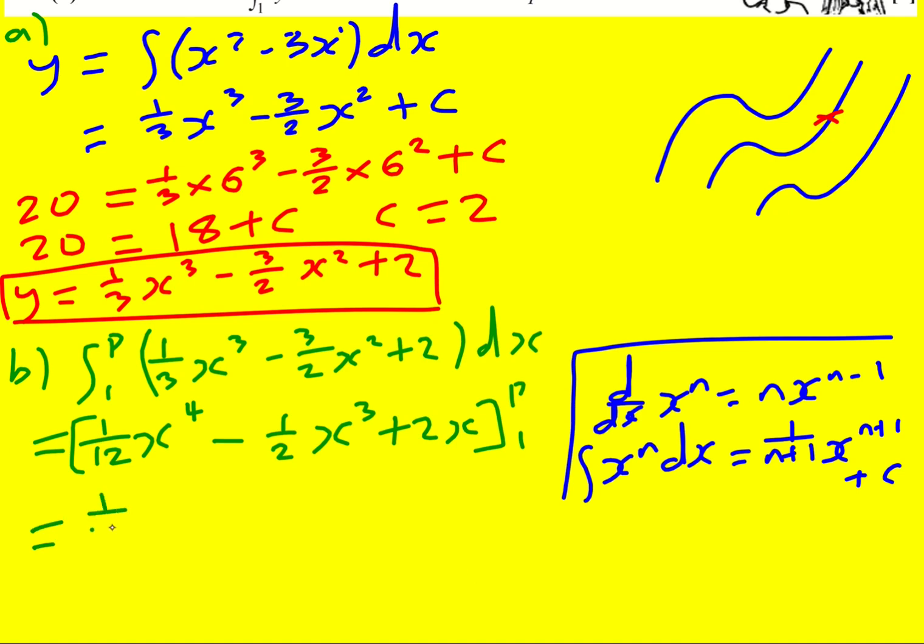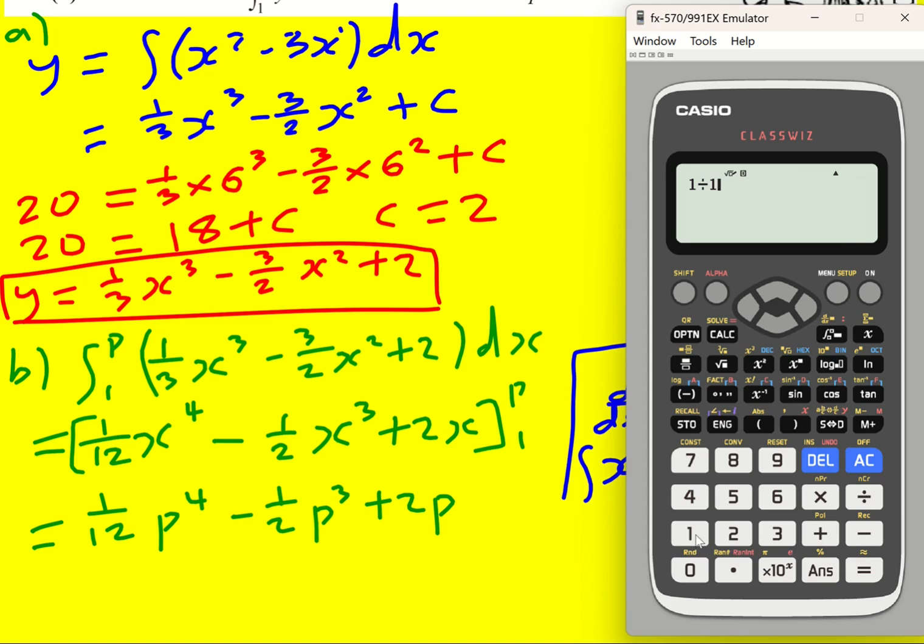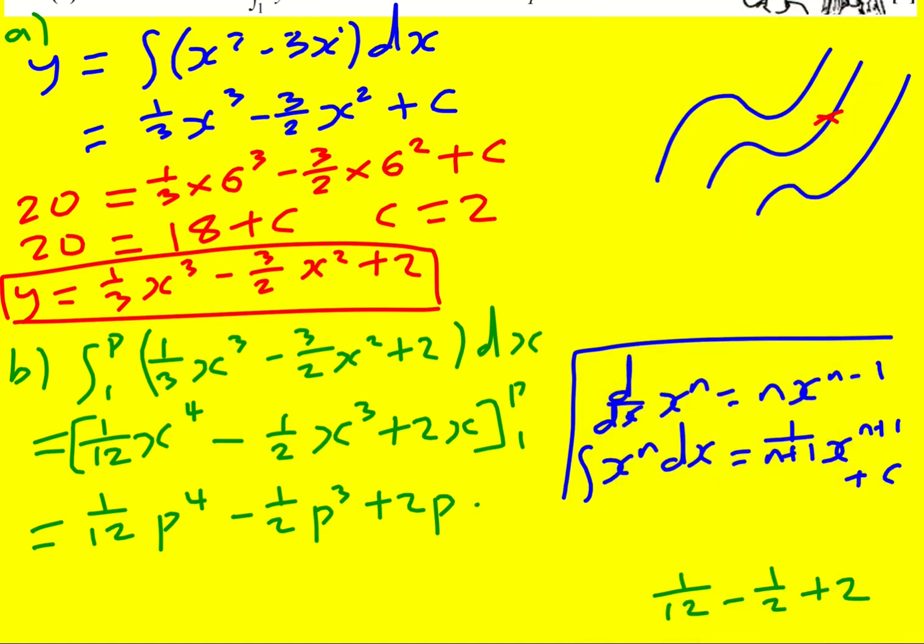Nearly there. Substituting the p we're just going to have to leave it in terms of that. And then when I put 1 in, I'm not going to write the whole thing out again, I'm going to go with 1 over 12 minus a half plus 2. I'm going to substitute 1 in. Now we've got 19 over 12 so it's going to be minus that, remember minus 19 over 12.